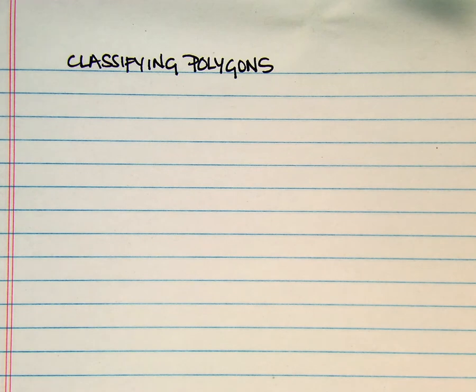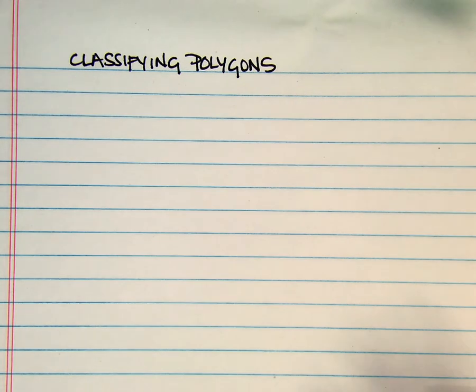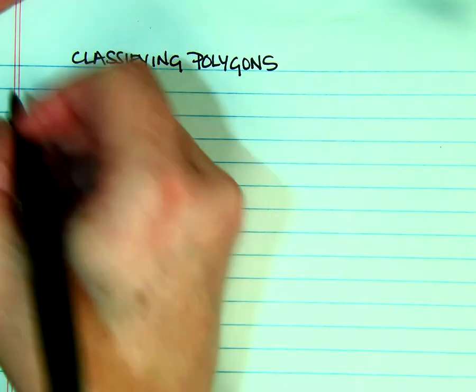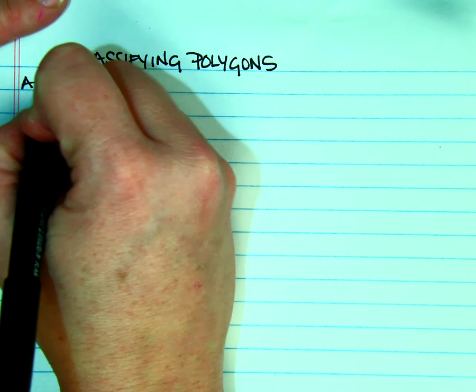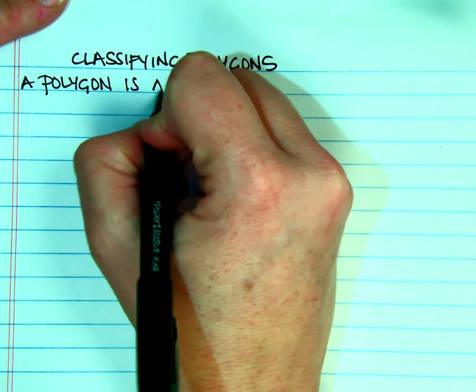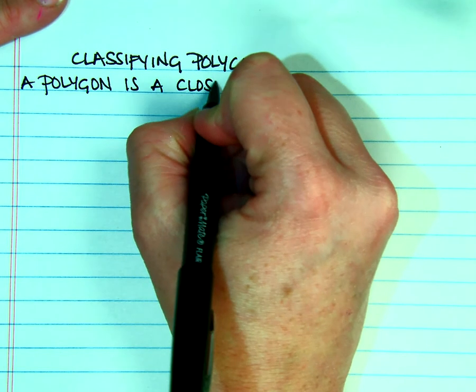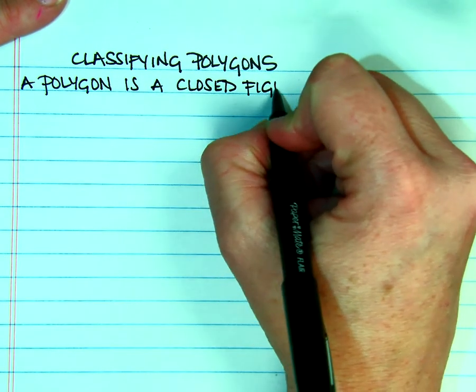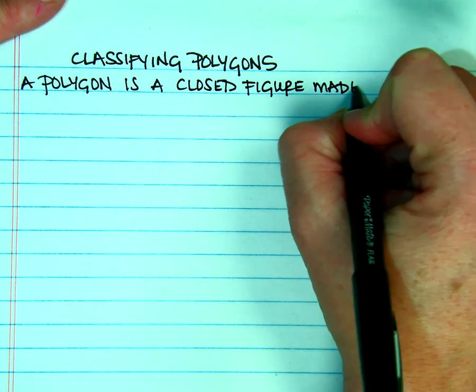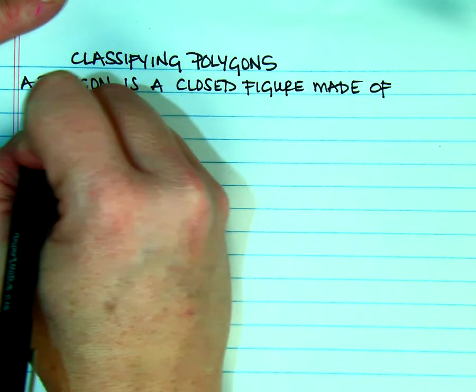In this video, we're going to talk about classifying polygons. This is going to be really heavy on some vocabulary. We have polygons. First of all, a polygon is a closed figure made of segments.